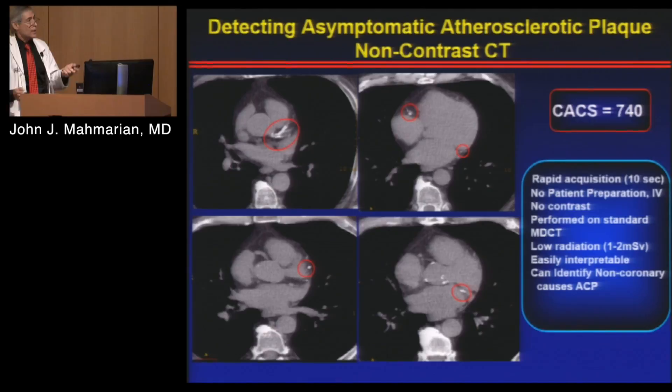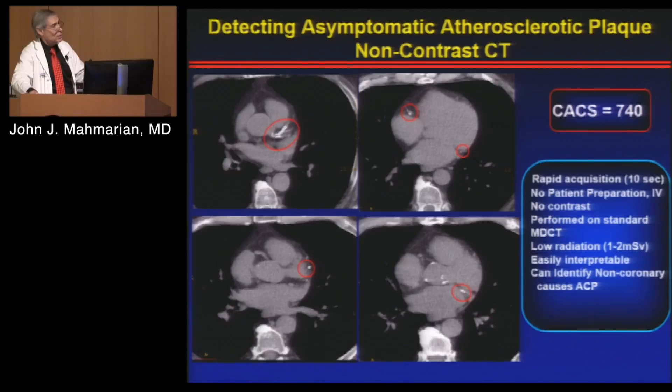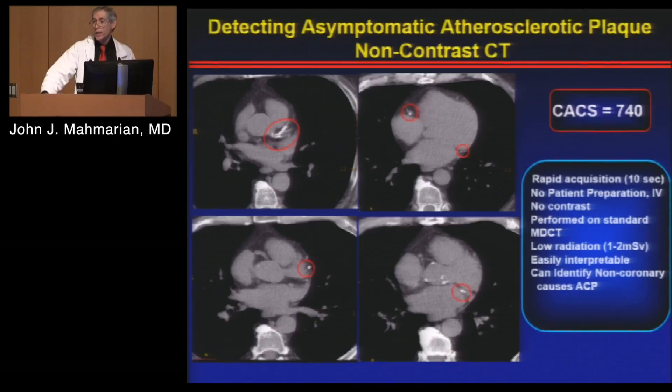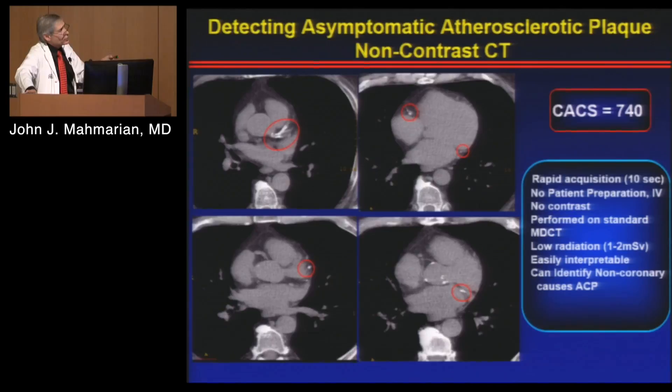Calcium scoring is rapid — 10-second acquisition, no patient preparation, no IVs, no contrast, performed on standard CT cameras with low radiation of 1-2 millisieverts. It's easily interpretable and can identify non-coronary causes of chest pain. An asymptomatic patient can have calcium scored in the coronary arteries — for example, a calcium score of 740, which is severe. Based on data in 44,000 patients, if you have a normal calcium score of zero, you basically don't have events — a 99.8% chance of being alive and well year-to-year.